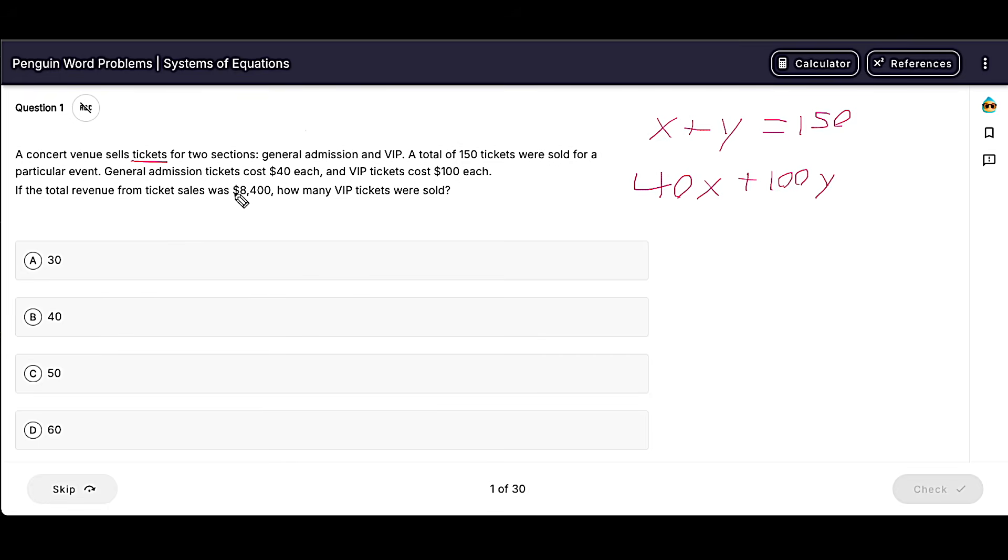And then finally, they give us a total value, $8,400. So the majority of these types of questions are going to be set up exactly like this, where we have items plus items equals total items, and value plus value equals total value.